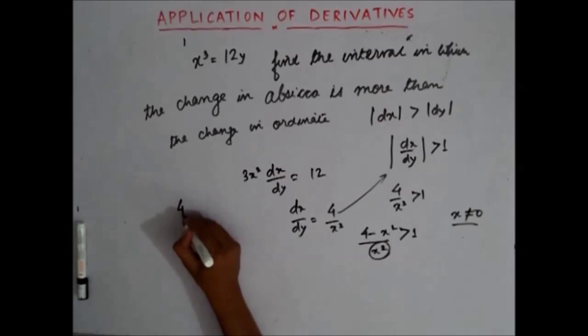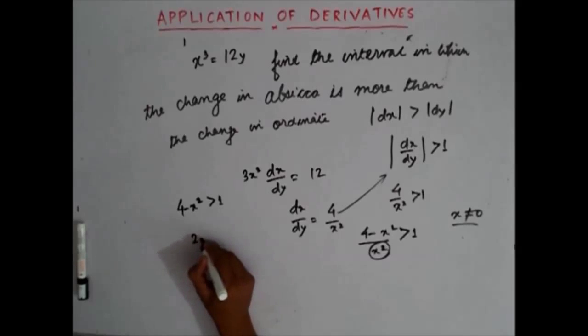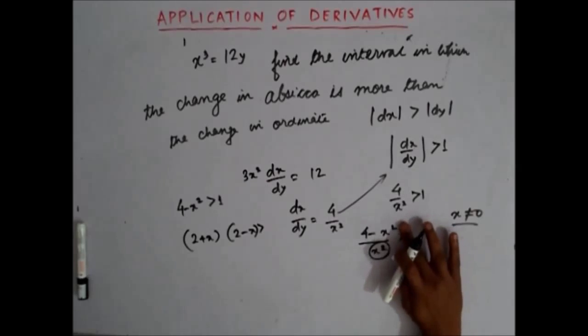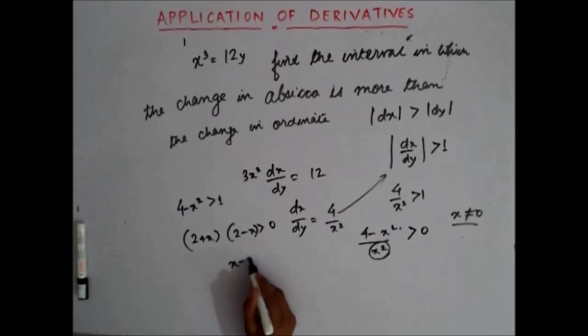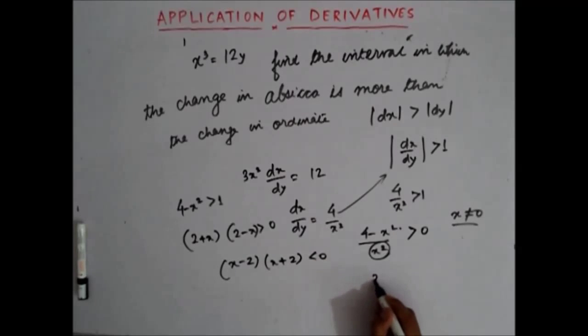Now 4 minus x square should be greater than 1, assuming that x is not equal to 0. That means 2 plus x times 2 minus x is greater... Sorry, here I have made a mistake. This should be greater than 0. It should be greater than 0 because I have taken 1 to this side. Now which means I have taken minus sign common, x plus 2 times x minus 2 should be less than 0. Which means that x should lie between minus 2 to 2.